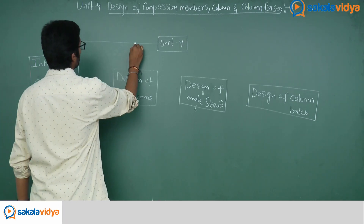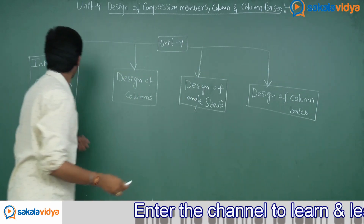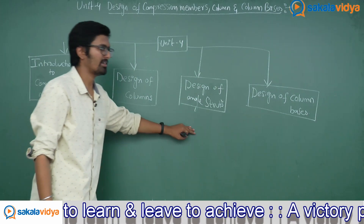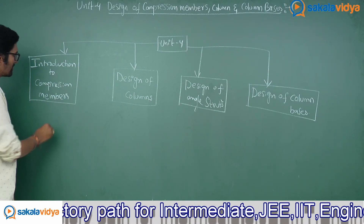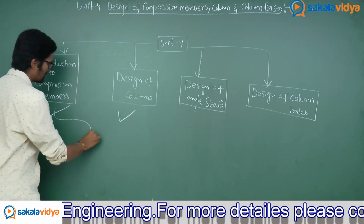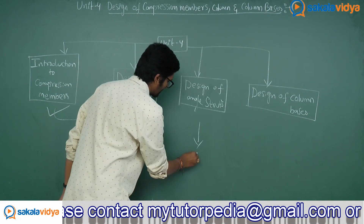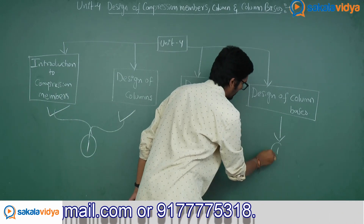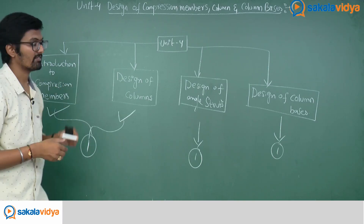So chapter four can be broadly classified into four parts: introduction to compression members, design of columns, design of angle struts, and design of column bases. We can expect one long answer from introduction to compression members and design of columns combined, one long answer from design of angle struts, and one long answer from design of column bases — totaling three long answers from chapter four.